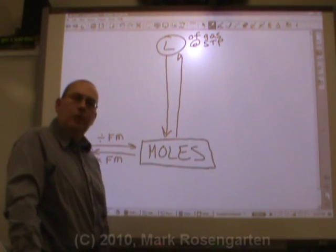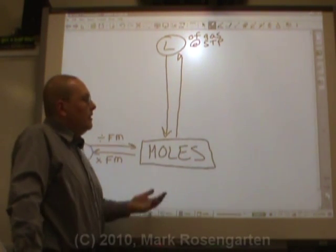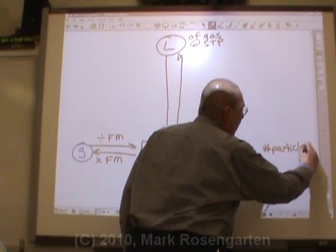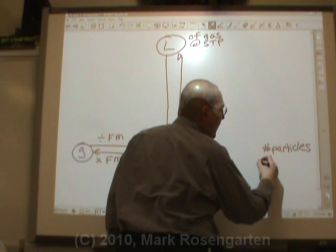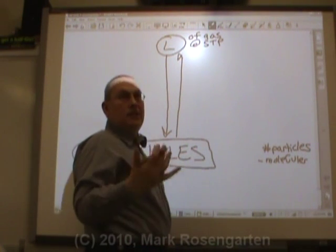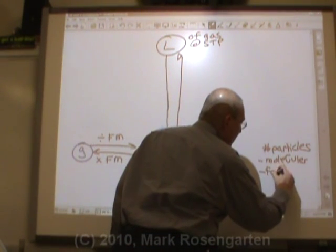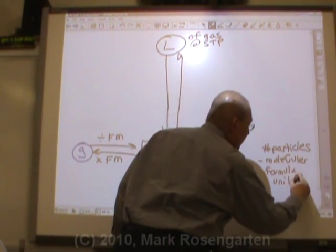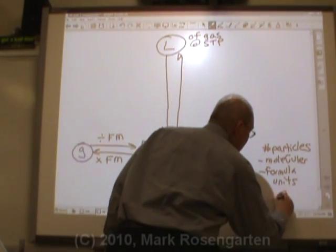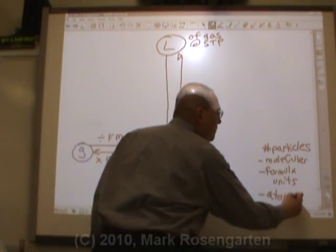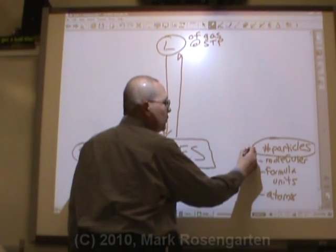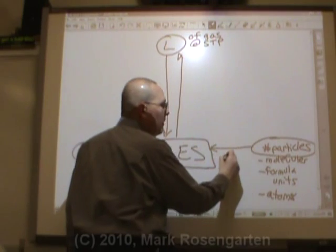The other thing you can convert to moles is the number of molecules you happen to have. How many molecules are there in a mole? Well, how many of anything are there in a mole? Now, I write number of particles here because this can apply to molecules if you're talking about covalent bonds, you know, non-metal to non-metal. Formula units, if what you're talking about is an ionic compound, or if you're talking about an element, atoms. So, number of particles can mean any of those things. We can convert how many molecules, formula units, or atoms we have to moles, or moles back to any of those.